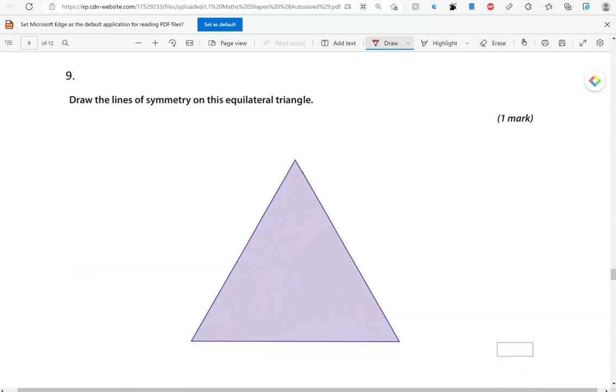Draw the lines of symmetry on this equilateral triangle. Equilateral means that it has equal side lengths. So, this is equal to this and to this. And the angles have equal sizes. So, they are equal as well. So, this type of triangle has 1, 2, 3 lines of symmetry.